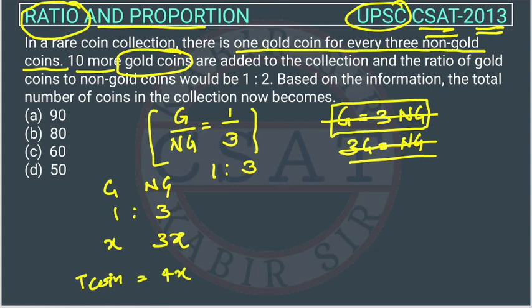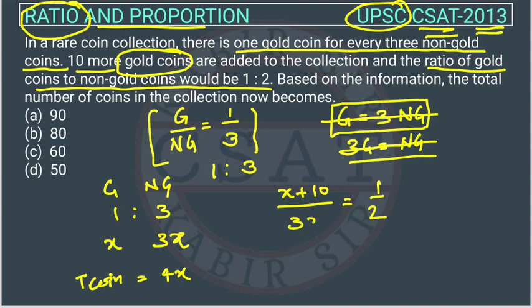Now 10 more gold coins are added, so the gold coins became x plus 10. The ratio of gold coins to non-gold coins would be, now the new ratio is 1 by 2. Non-gold coins are the same, still 3x. So we will simplify this equation.